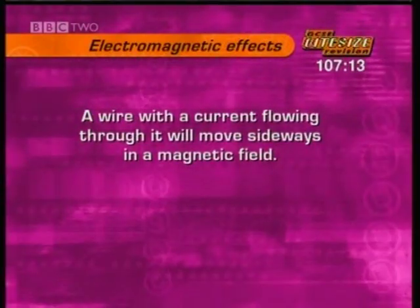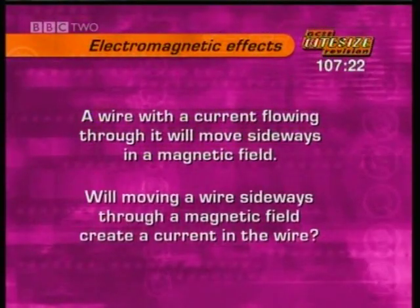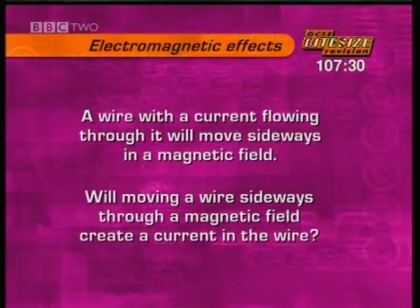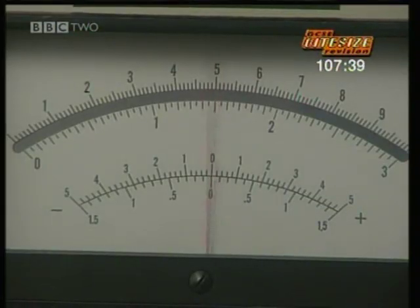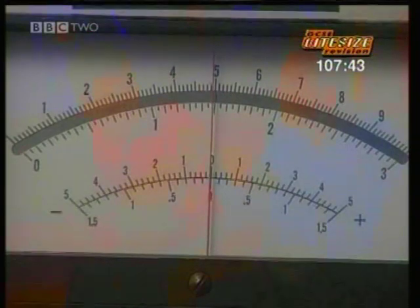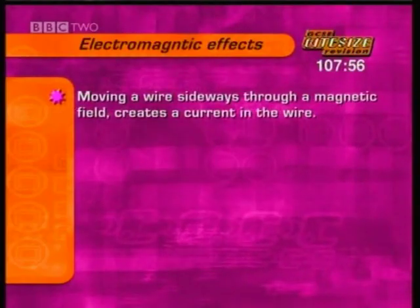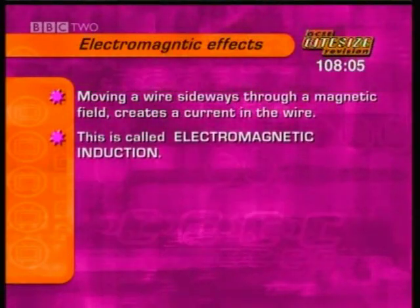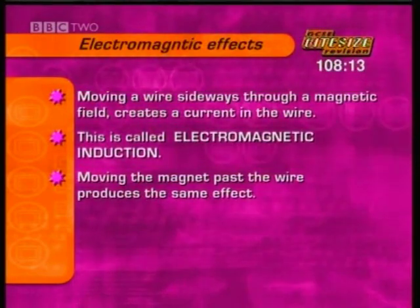We saw how a wire with a current flowing in it moves sideways in a magnetic field. Can the opposite be true? Will moving a wire sideways through a magnetic field create a current in the wire? When you move the wire past the magnet, a needle moves — that's current being generated in the wire. It also works if you move the magnet past the wire. So it doesn't matter which is moving — provided it's moving, you get electricity. The reverse is true: moving a wire sideways through a magnetic field does create a current. This is called electromagnetic induction. Moving the magnet past a wire produces the same effect. It's the movement that creates the current. Reversing the movement reverses the current.